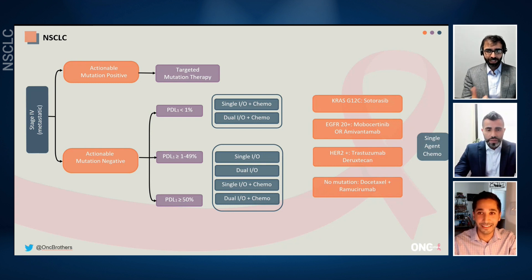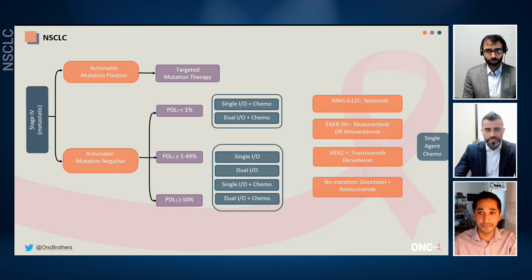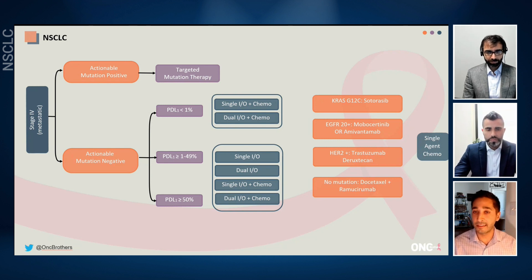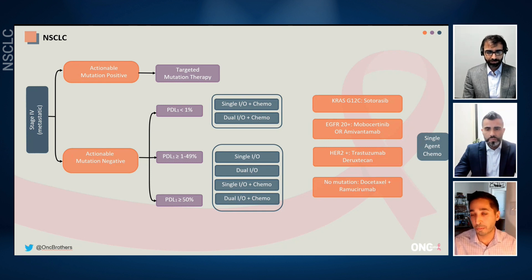Going back to PD-L1 less than 1% — does TMB play a role? We see a small subset where TPS score is low but TMB score is high. I often don't rely on TMB alone to make clinical decisions. You can see this discordance between PD-L1 IHC testing and TMB. In my clinical practice, following FDA approvals and the algorithm, we tend to follow PD-L1 TPS — the tumor proportion score — for decision-making.